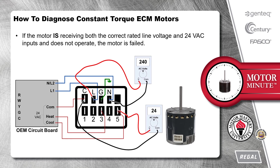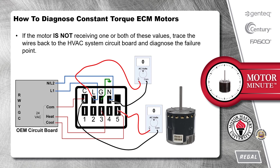If the motor is receiving both the correct rated line voltage and 24-volt AC inputs and does not operate, the motor is failed. If the motor is not receiving one or both of these values, trace the wires back to the HVAC system circuit board and diagnose the failure point.